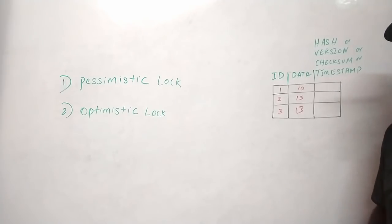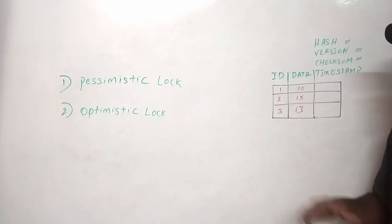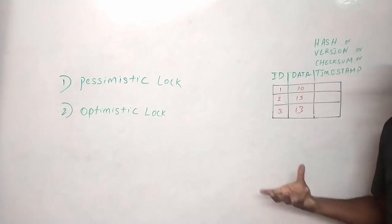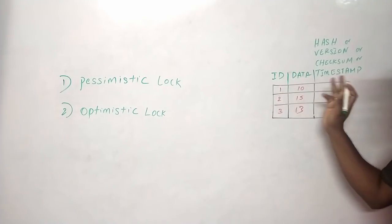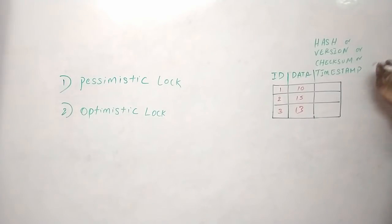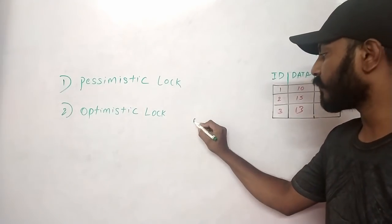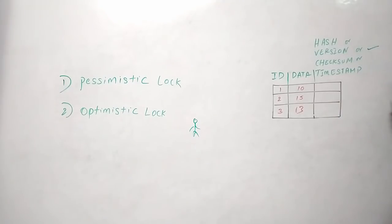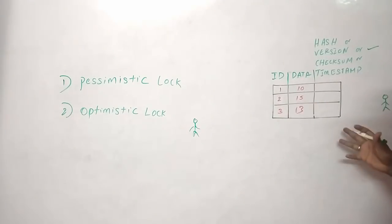There are many advantages of optimistic lock and it should be used only in specific places, not everywhere. To explain how it works, consider a table with three columns: ID, data, and version. Let's say there are two people who both want to modify the data in this table.